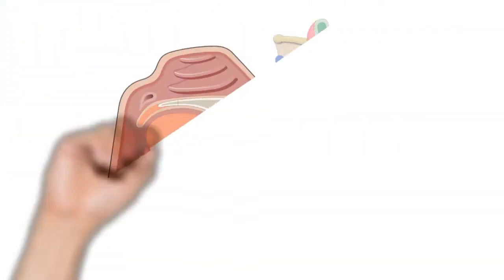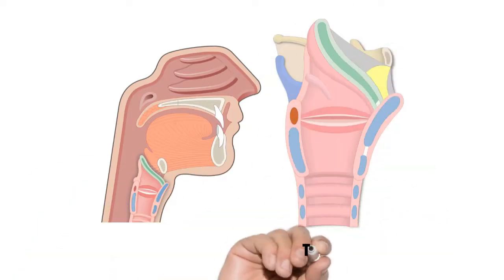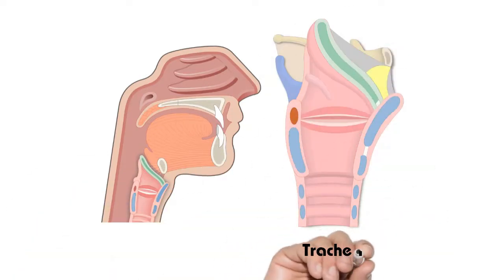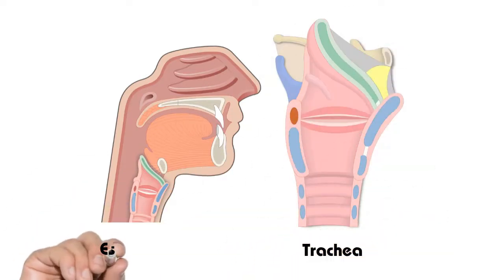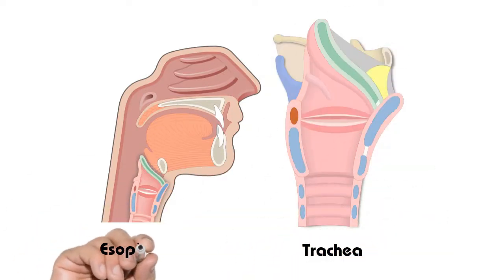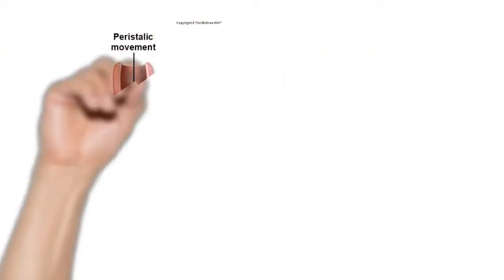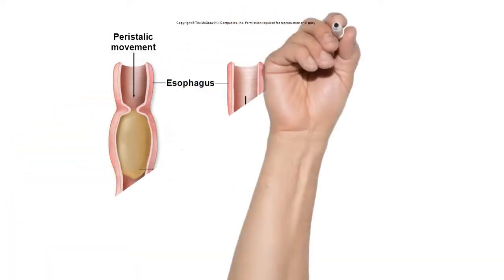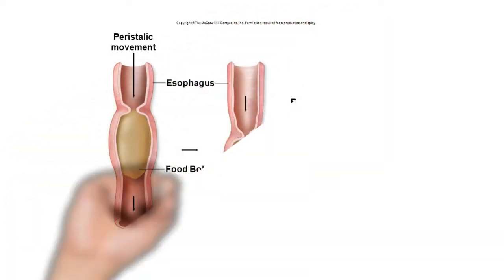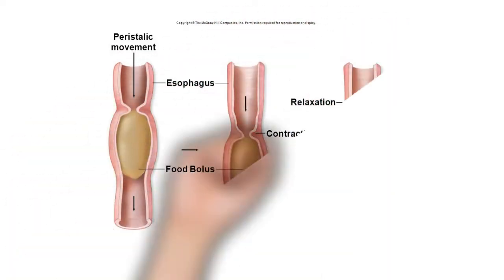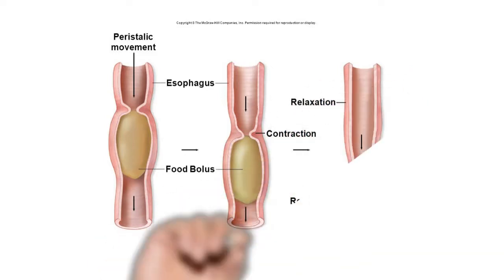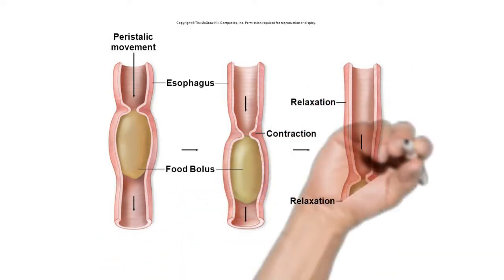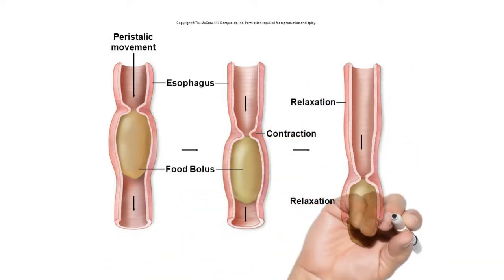The food passes over the epiglottis, which prevents food entry into the respiratory system, and then into the esophagus, which connects the pharynx to the stomach. The one-way movement of the food mass, now called a bolus, is controlled by wave-like involuntary muscle contractions. This movement is known as peristalsis.